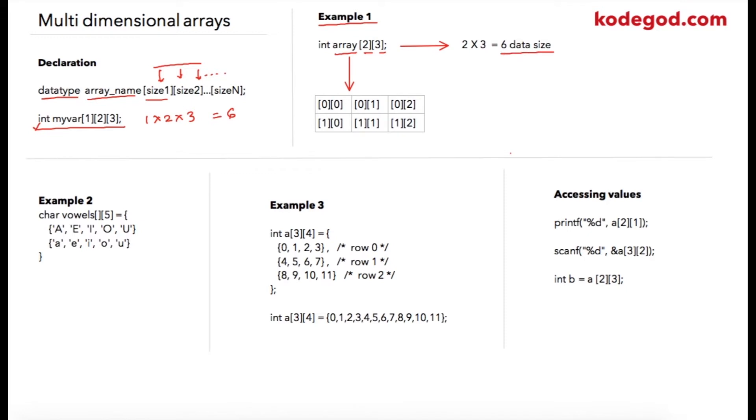The better way to visualize a two-dimensional array is like this. In this table, these are your rows and these are your columns. So in array declaration, 2 is your row and 3 is your column. So an array of 2 and 3 is basically 2 rows and 3 columns.